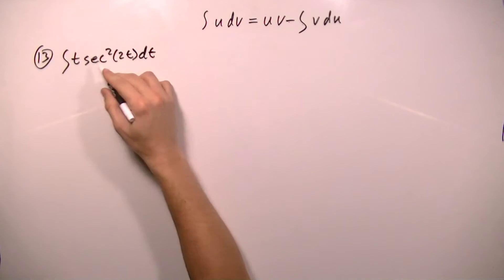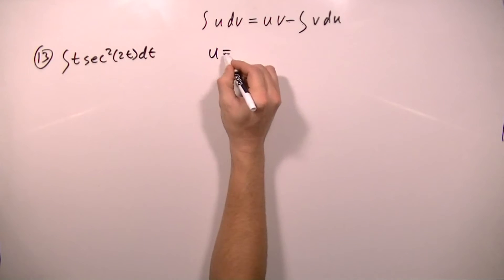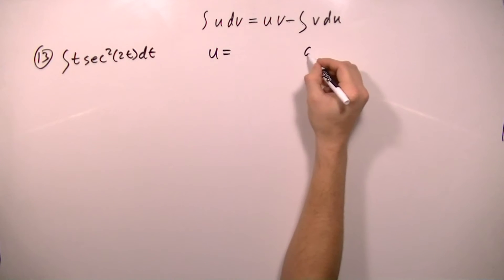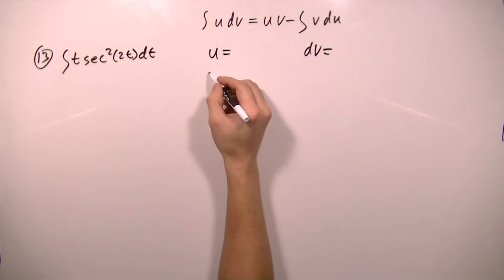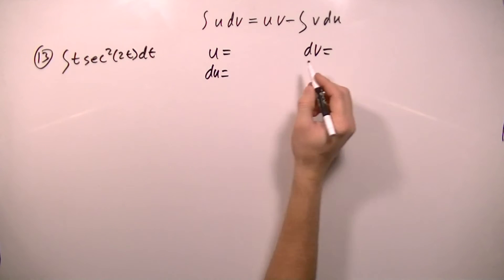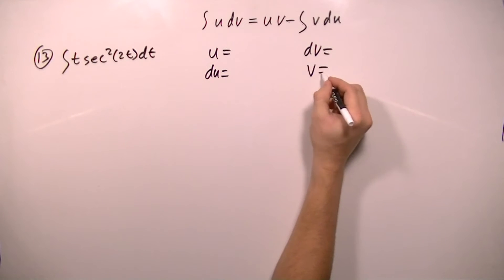Now I'm going to have to pick one of these factors to set equal to u, and I'm also going to have to set one of these factors equal to dv. And then I will have to find the derivative of u, and I will have to find the integral of dv.